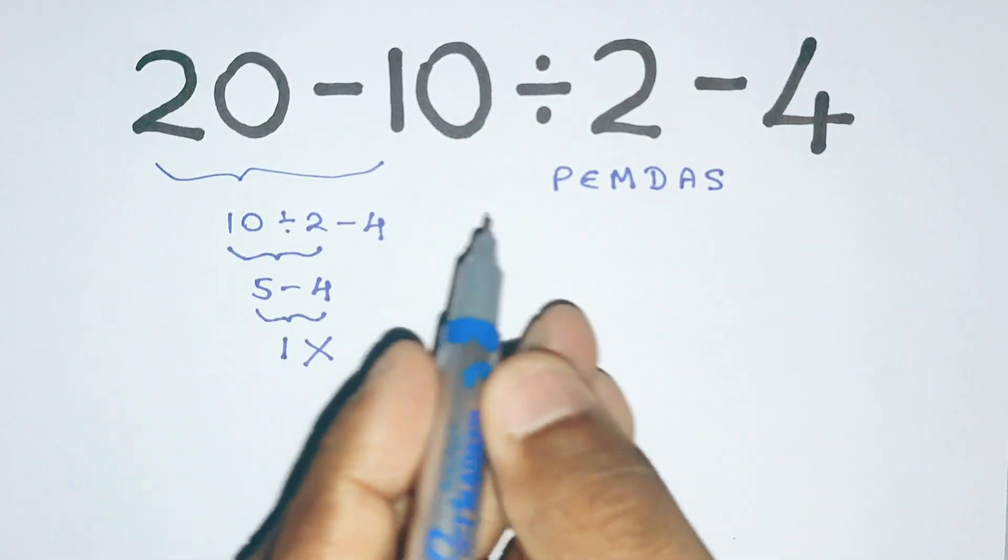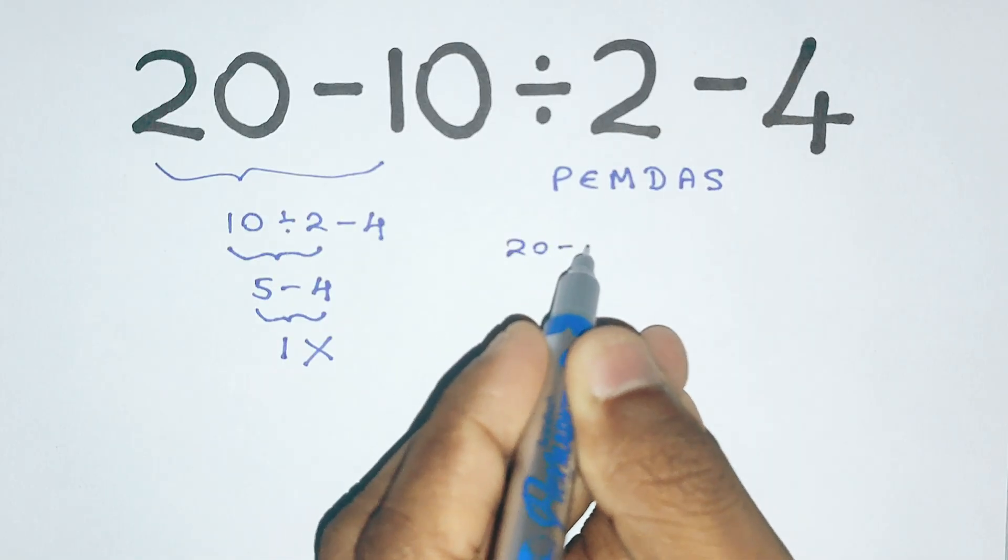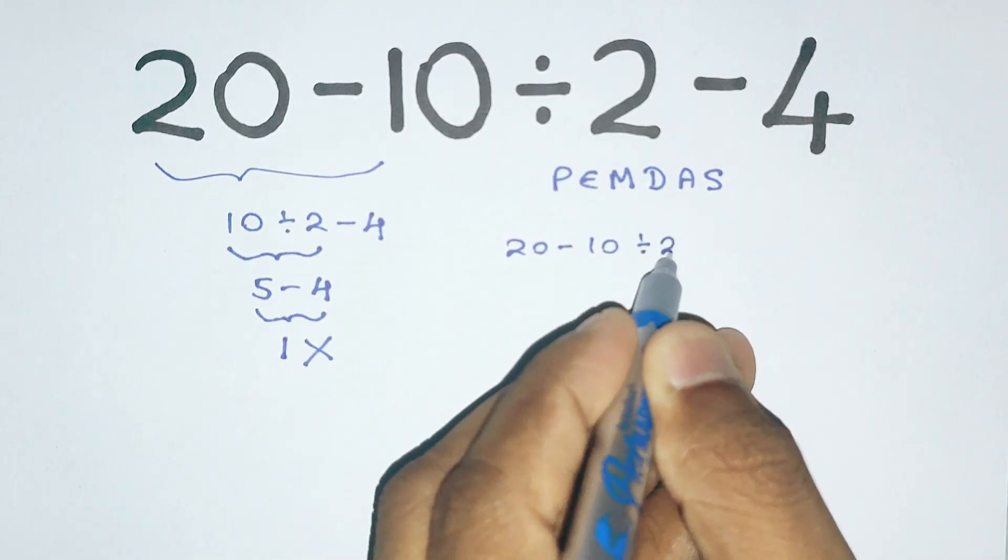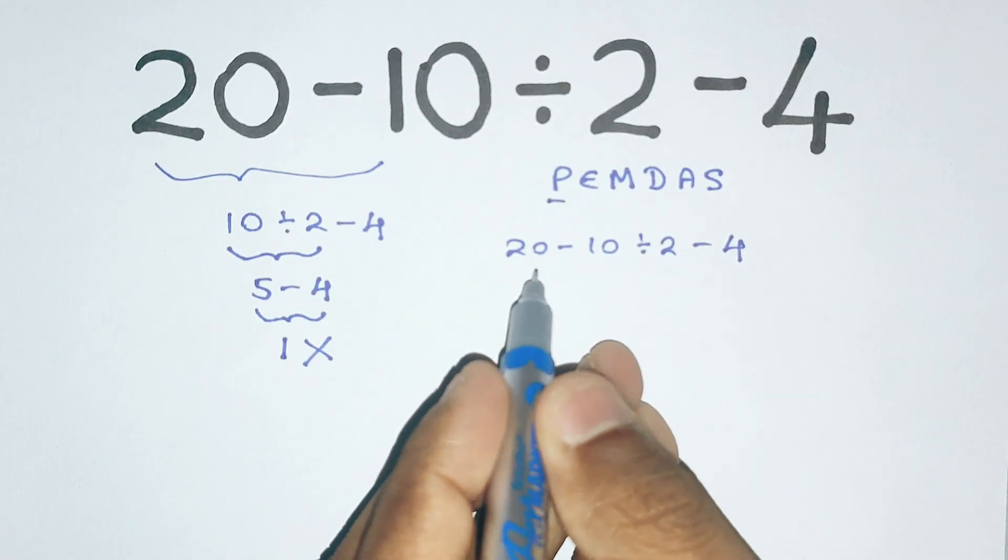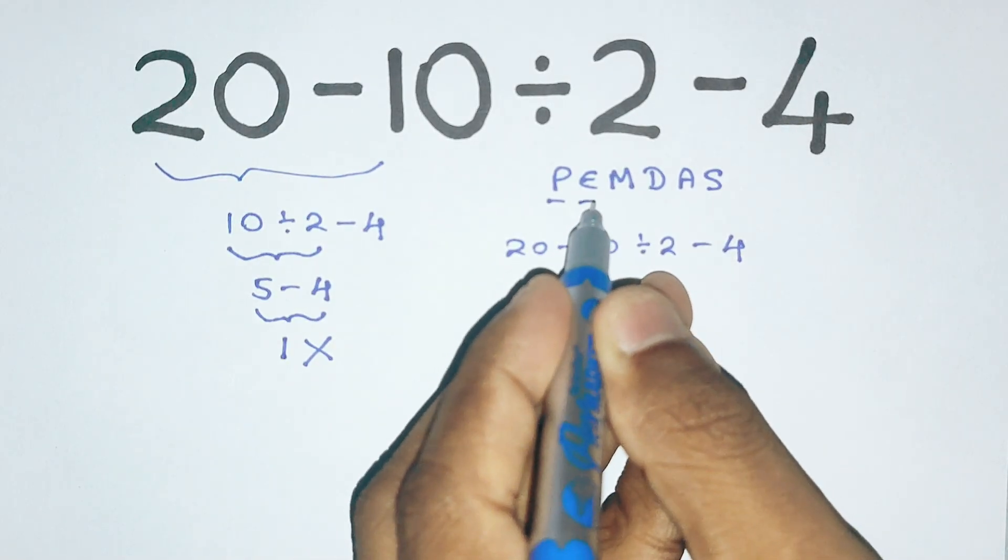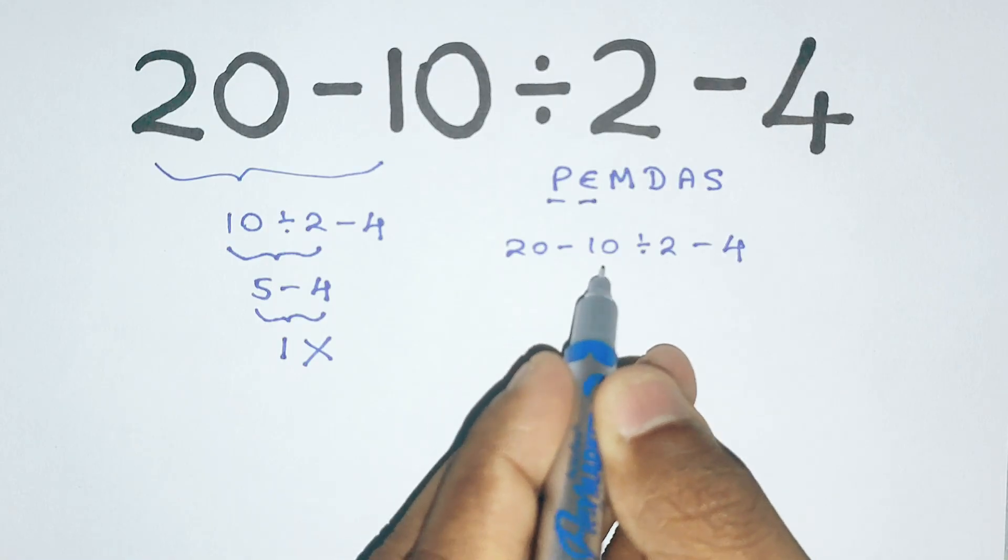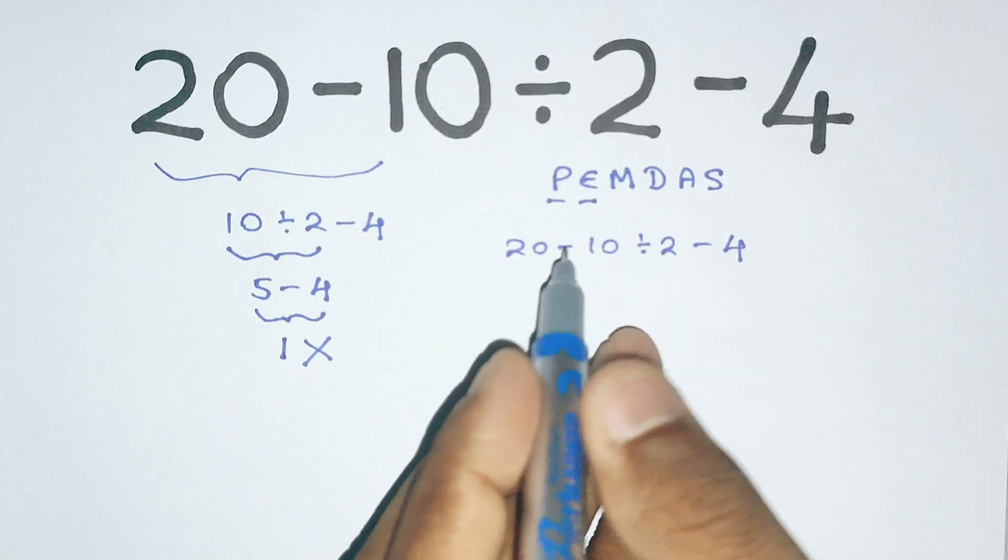So let's apply PEMDAS to this problem, 20 minus 10 divided by 2 minus 4. First we check for parenthesis, but we don't see any parenthesis here. Next we check for exponents, and there aren't any exponents in this problem either.